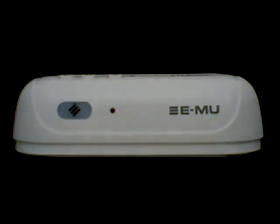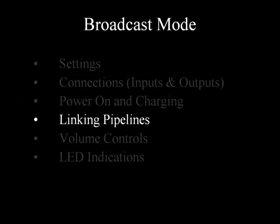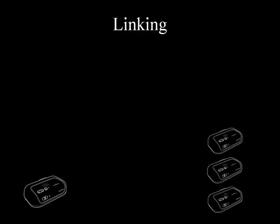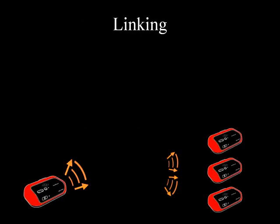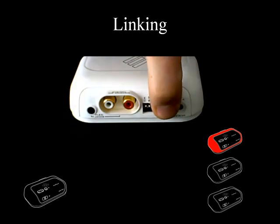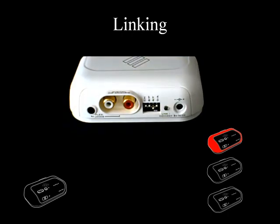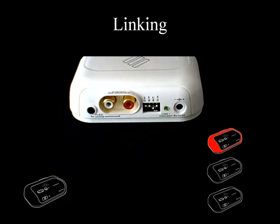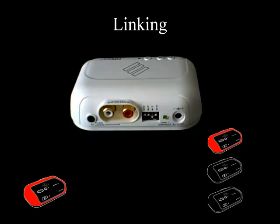Now that your pipelines are configured and charged, it's time to connect them. Often, when you switch on all of your pipeline units they will automatically link with each other. If this does not happen, here is the process for linking manually: turn on your first receiving unit and press the connect button on the back of the receiver. In broadcast mode, the link LED flashes as it searches for a transmitter to pair with. Now turn on the transmitter unit and press the connect button on the back of the transmitter. The link LED on the back of the receiver flashes and then lights up solid green when pairing with the transmitter is successful.